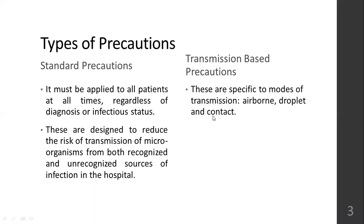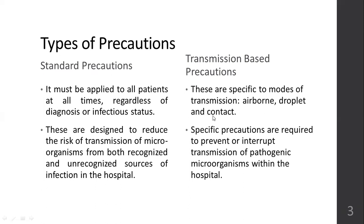When it comes to transmission-based precautions, these are specific to modes of transmission. There are different modes of transmission like airborne, droplet, and contact. Based on these modes of transmission, transmission-based precautions will be put into use. These are specific precautions required to prevent or interrupt the transmission of specific kinds of pathogens, to break a specific chain of infection.